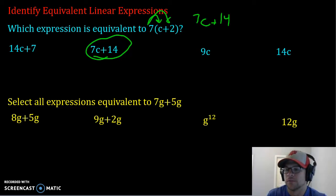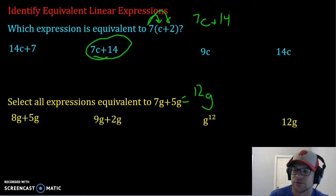All right, select all expressions equivalent to 7g plus 5g. So let's reduce this to see what else it could be equal to. 7g plus 5g when you add them together because of the same sign, 7 plus 5 is 12 and your term is g.